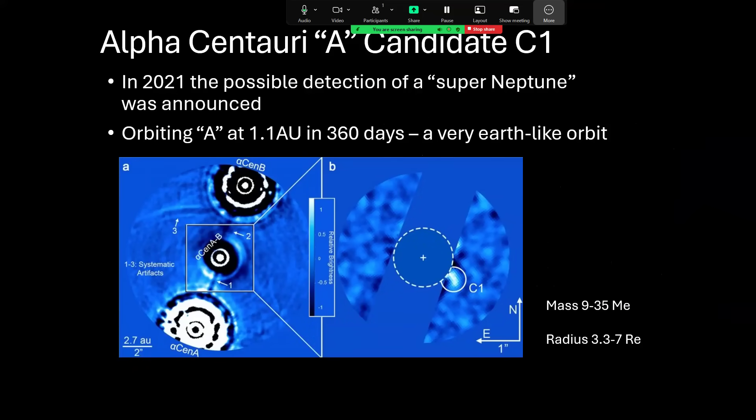Now, back in 2021, there was a possible detection of Alpha Centauri candidate planet C1, a super Neptune. I don't know why they call them super Neptune because super Neptunes are like Saturn, really. And perhaps I suppose we might start thinking rings as soon as someone says Saturn. So perhaps that's why they choose to call them super Neptunes. And this was detected in this image here of an orbit of 1.1 astronomical units taking just about a year, 360 days. And the estimates of the mass were somewhat vague, somewhere between 9 and 35 times the mass of the Earth and somewhere in terms of size between 3.3 and 7 times the Earth's radius.